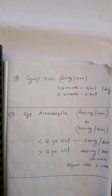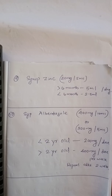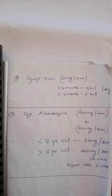Next drug is syrup zinc, mostly given in diarrhea patients. The available strength is 20 mg per 5 ml. For children more than 6 months old, we can give 5 ml per day; for less than 6 months, we give 2.5 ml per day.